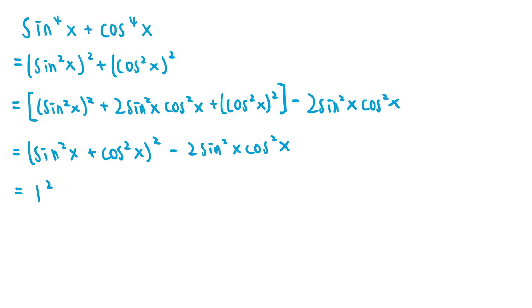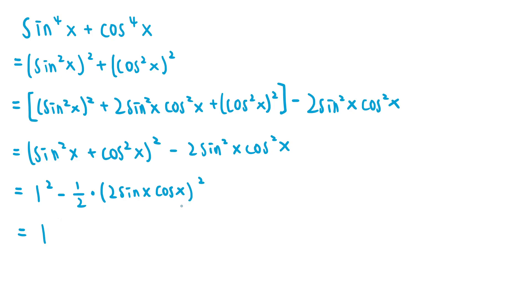Sine squared of x plus cosine squared of x equals 1 by the Pythagorean identity, so the first term is just 1 squared. The minus 2 sine squared x cosine squared of x term can be rewritten as minus one half times 2 sine x cosine x all squared. You can see that squaring the 2 gives a 4, and multiplying by the negative one half gives back the negative 2. By the double angle identity, 2 sine x cosine x equals sine of 2x, so the second term becomes negative one half times sine squared of 2x.